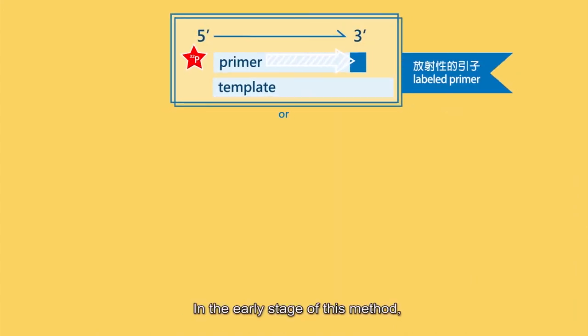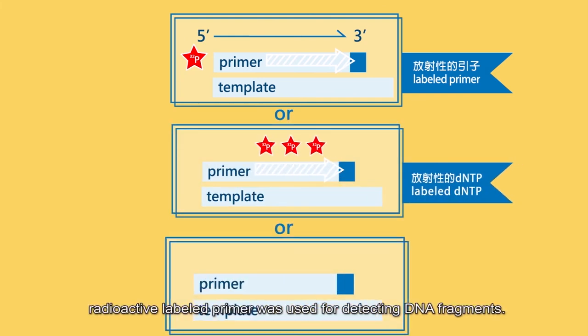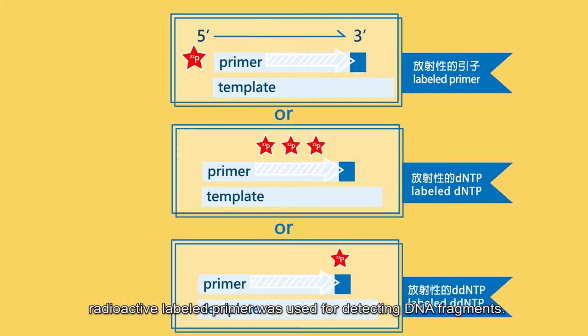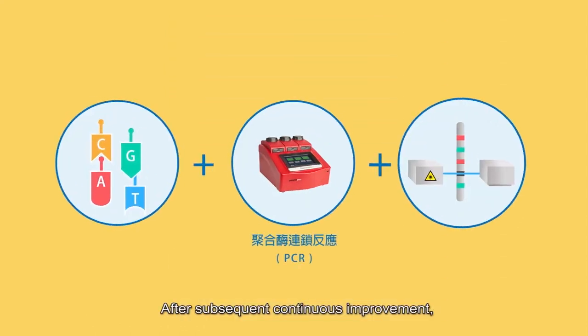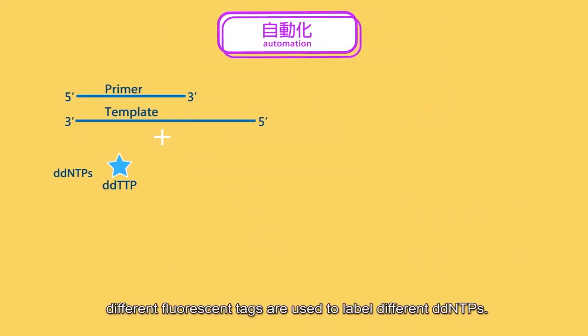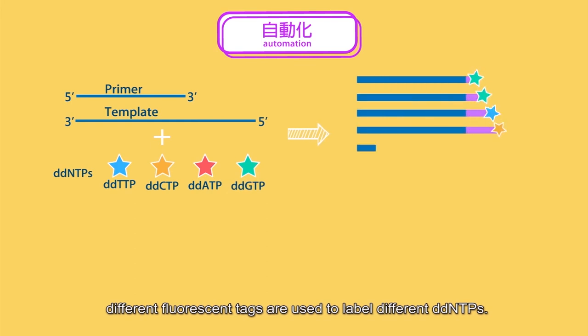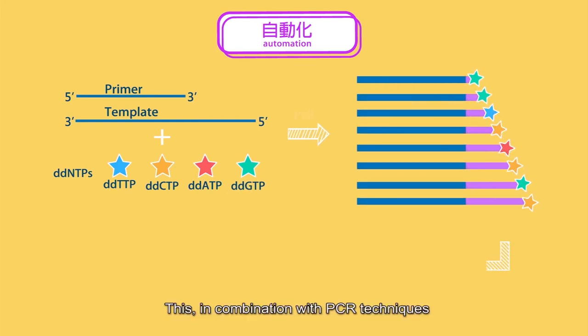In the early stage of this method, radioactive labeled primer was used for detecting DNA fragments. After subsequent continuous improvement, different fluorescent tags are used to label different DDNTPs.